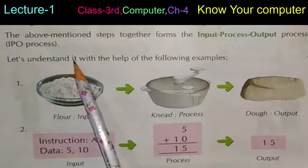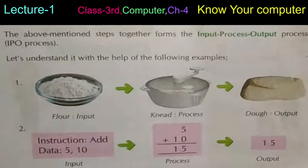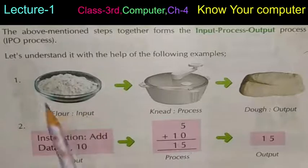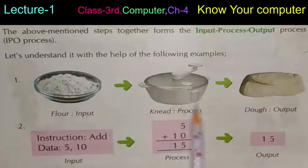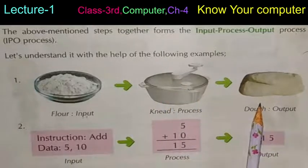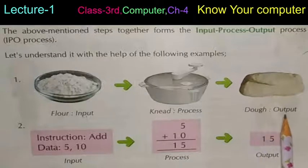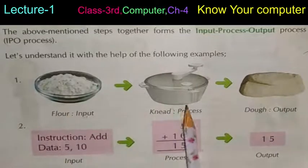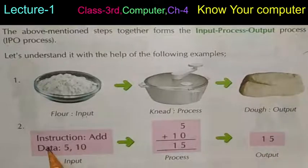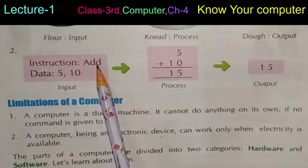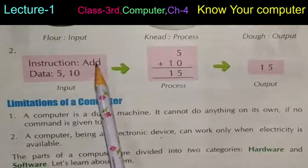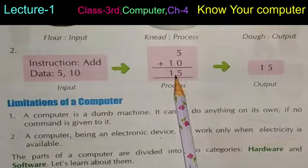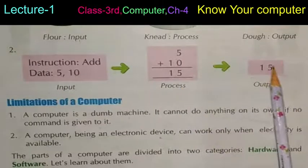Let us understand IPO with an example. Flour — aata — is our input. It is given to a process: it is kneaded and turned into dough — that is our processed form. The dough (output) comes out. Another example: if our instruction is to add 5 and 10, that is our input. The CPU processes it — 5 plus 10 equals 15 — and then the output is 15.